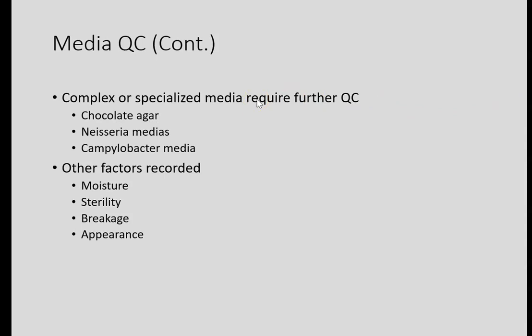The three types of media that may need even more testing than normal are where you actually have to see if you can grow particular organisms and the media will inhibit specific organisms. Media that will grow Neisseria or Campylobacter, maybe some others for specialty organisms, and chocolate agar — because chocolate agar has to be able to recover certain organisms or it's no good to us.